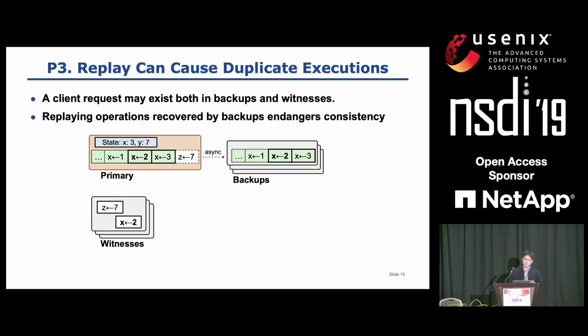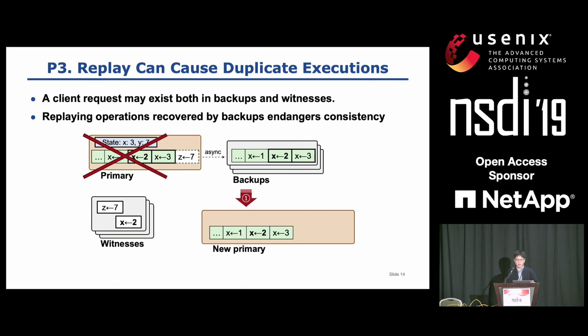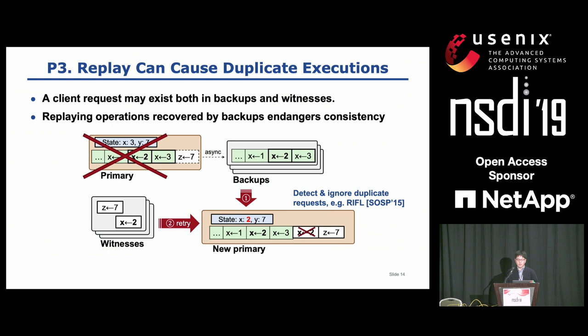The third issue is avoiding re-executions during recovery. An operation saved in a witness may also be synced to backups before a primary crashes. In that case, both the backup and witness can have the operation. If the primary crashes, we recover the operation once from a backup and a second time by replaying the same operation from a witness. Such duplicate execution can cause inconsistency — in this example, the duplicate execution reverted the value of X from 3 to 2. So CURP detects such duplicates and ignores them during recovery by using a mechanism for exactly-once execution presented in SOSP '15.